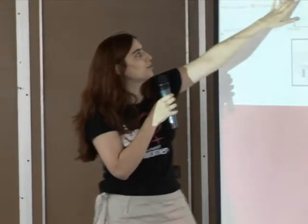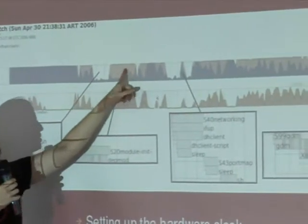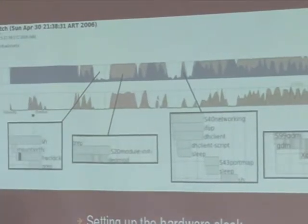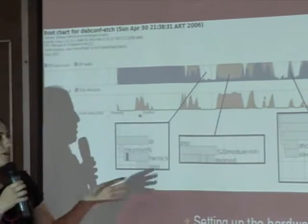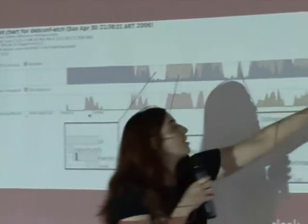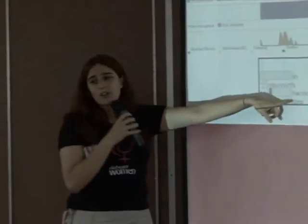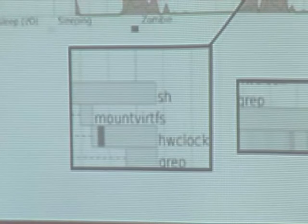Looking at what takes the time: in the boot chart, the blue is CPU use, the pink is waiting for the hard drive, and the other color is hard drive reading. We mainly don't want gaps where the CPU is not being used and the hard drive is not being read. Hardware clock being synchronized is one such gap — all distributions have this problem, taking around two seconds.